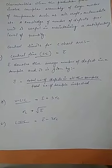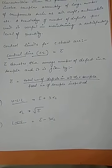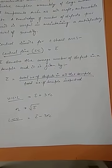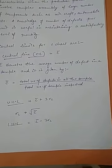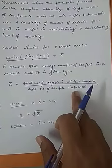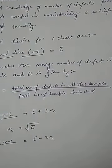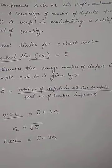Suppose we have 10 samples: for sample number one we have two defects, for sample number two we have three defects. We will simply add the number of defects and divide by the total number of samples inspected. So if 10 samples were inspected, we divide by 10.